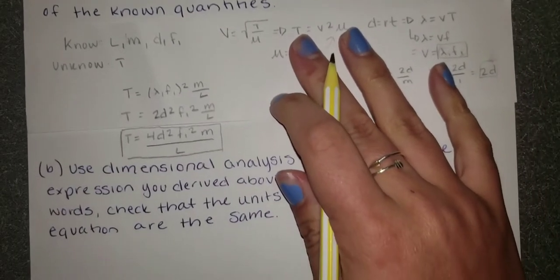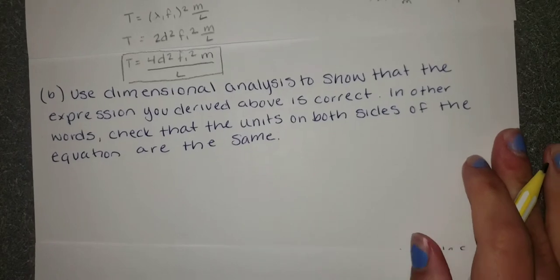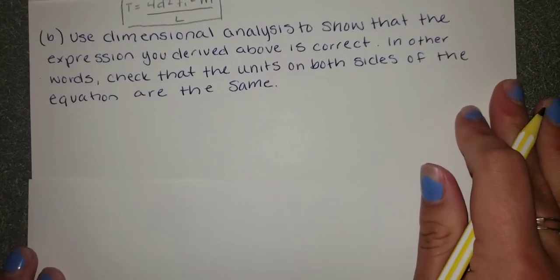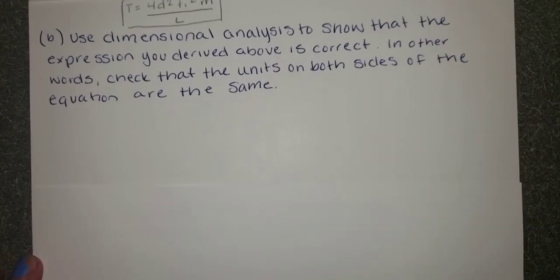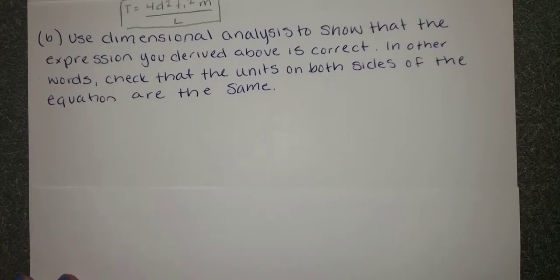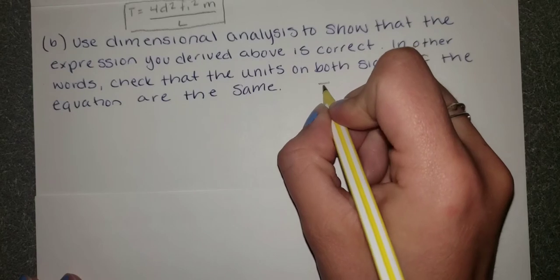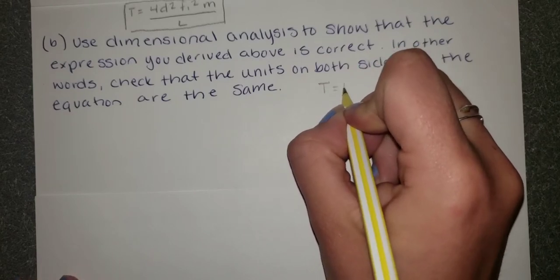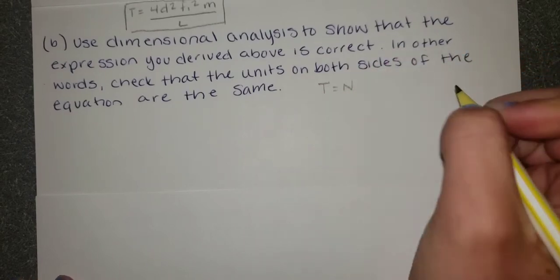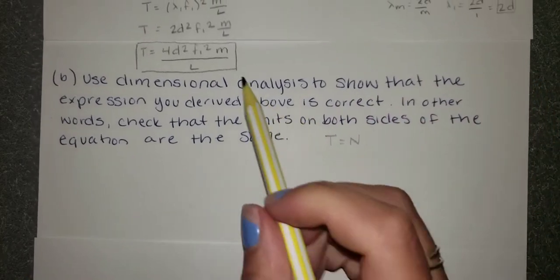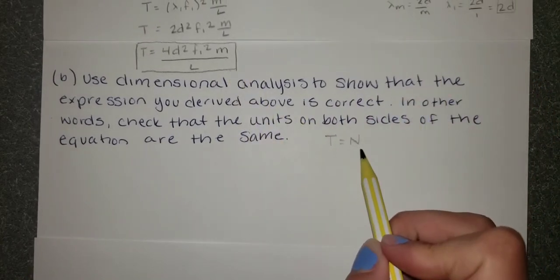Now part b asks us to use dimensional analysis to show that the expression we derived above is correct. In other words, we need to check that the units on both sides of the equation are the same. So we know that the units for tension are equal to N or newtons. So we need to prove that this equation from up here is equal to newtons as well.